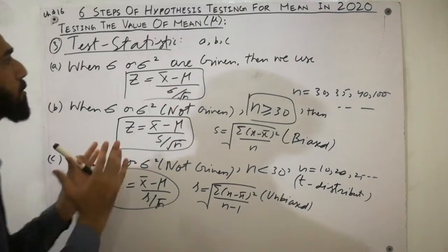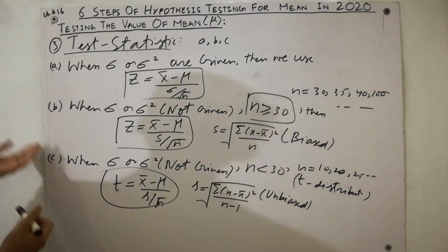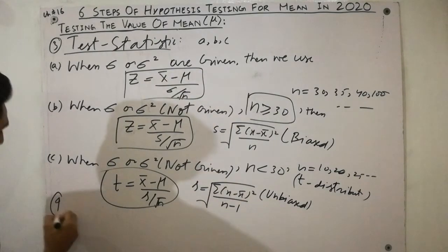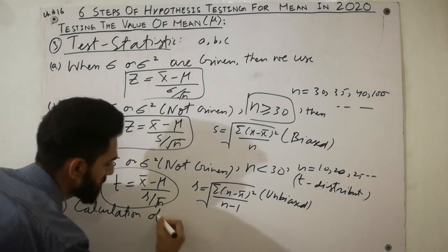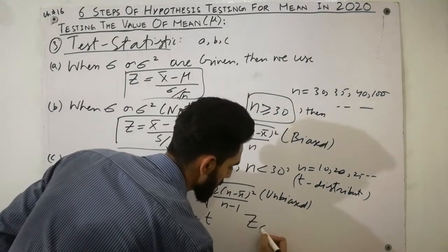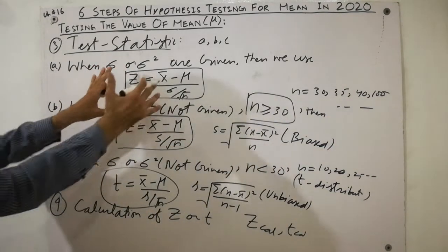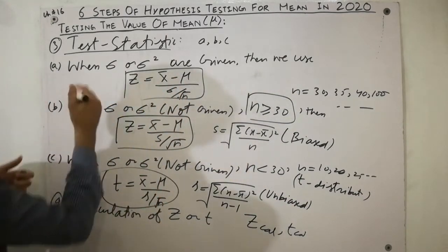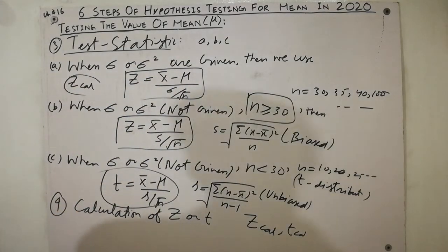Step four is the calculated value. After computing the test statistic — by substituting x-bar, mu, sigma, and n into the formula — we obtain the calculated value of Z or the calculated value of t. This calculation step is the fourth step.